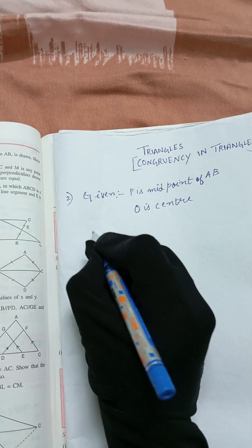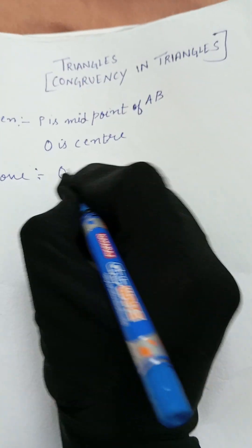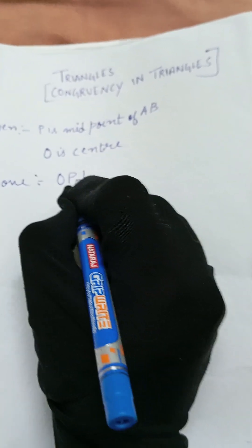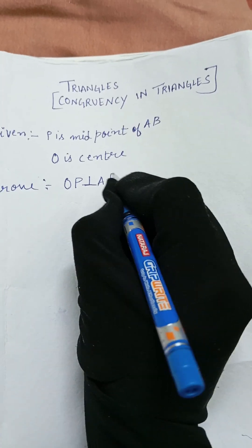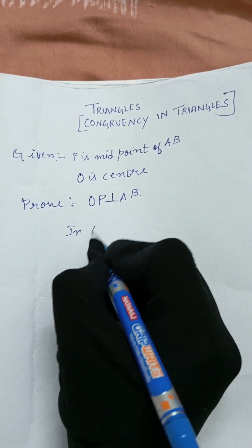Now, to prove: OP is perpendicular to AB. The symbol for perpendicular is used here.